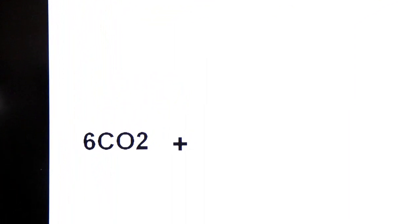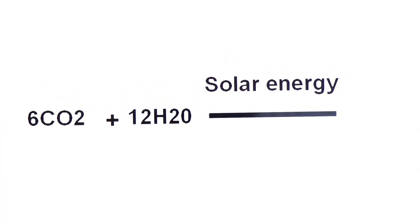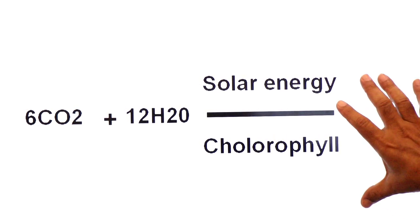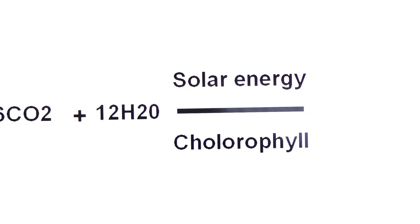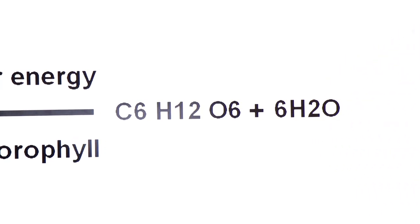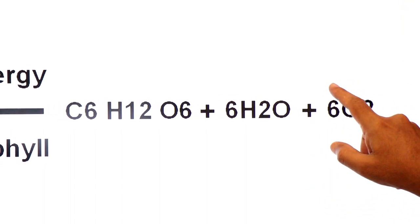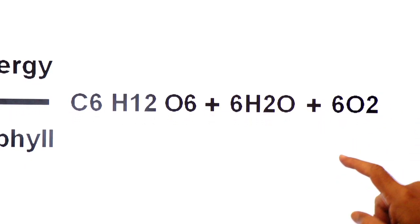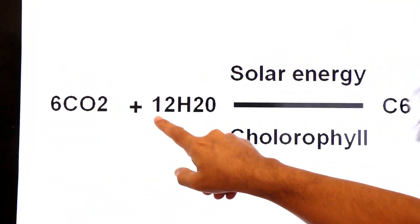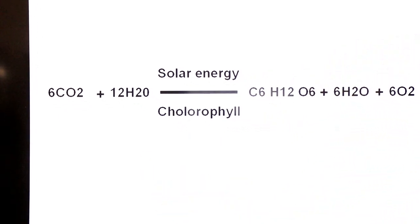Oxygenic photosynthesis is so called because one of its products is molecular oxygen, resulting from the oxidation — breakdown — of water. The equation: six molecules of carbon dioxide plus twelve molecules of water, using solar energy captured by the pigment chlorophyll, produce three products: glucose (C₆H₁₂O₆), six molecules of water, and six molecules of oxygen. All the oxygen released during photosynthesis comes from the breakdown of water molecules.